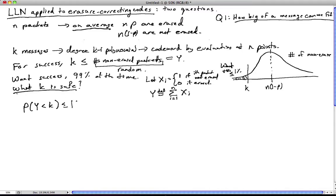So what we would like to have is the probability of Y being less than k to be less than or equal to 1%. So how do we do this? How do we go about finding a k that's safe enough to do this?